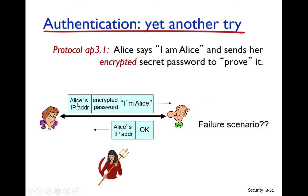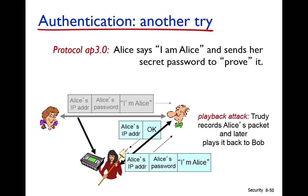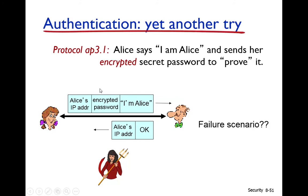When you log in to Gmail, Yahoo, or any web server, your password should not be sent in plain text because anyone can intercept it. To solve this problem, we have Protocol AP 3.1, where Alice's password is sent encrypted so if someone sees it they cannot understand it.